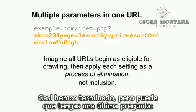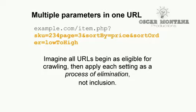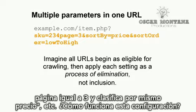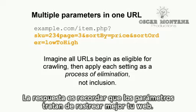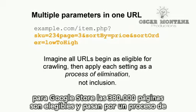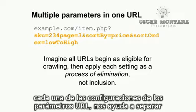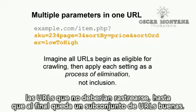You might be asking one last question: what about multiple parameters in one URL? For example, SKU equals 234, page equals 3, and sort by equals price, etc. — how does URL parameters work when there are multiple parameter settings? Remember that URL parameters is about crawling your site more efficiently. All URLs known for your site — say 380,000 URLs for the Google Store — begin as eligible for crawling, and then we work as a process of elimination, not inclusion. We take our knowledge of your site, combined with each of your settings in URL parameters, to slowly weed away the URLs that shouldn't be crawled, until we have a smaller subset of good URLs.